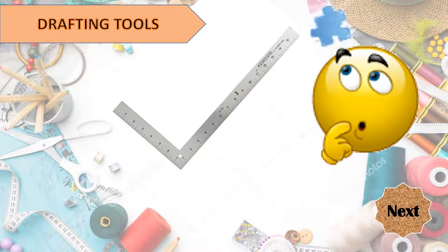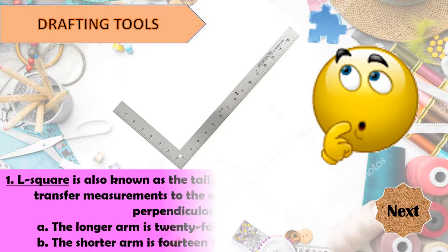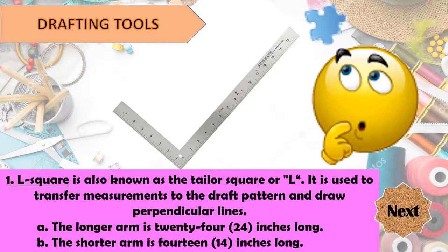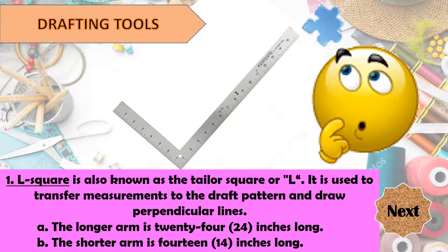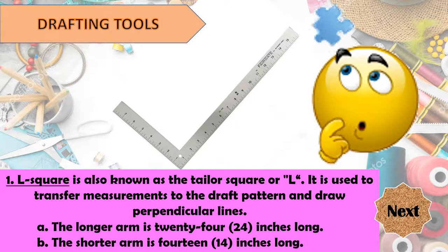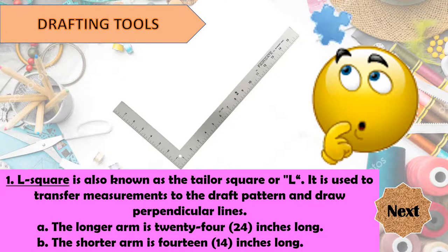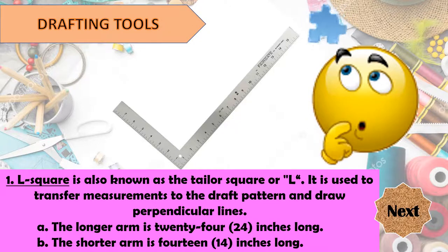What drafting tool is this? It is the L-square, also known as the Taylor Square. It is used to transfer measurements to the draft pattern and draw perpendicular lines. When you start drafting your pattern, you start with a perpendicular line and use the L-square. It has a longer arm of 24 inches and a shorter arm of 14 inches.